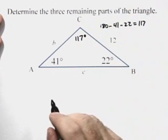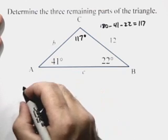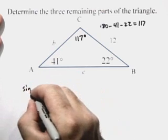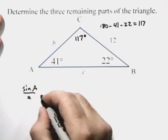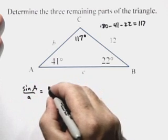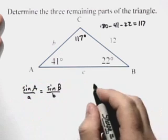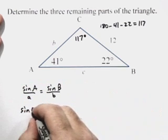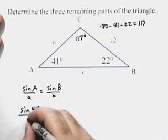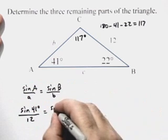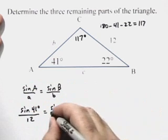We can use the law of sines to find the length of side B. The sine of angle A divided by A is equal to the sine of angle B divided by B. The sine of 41 degrees over 12 is equal to the sine of 22 degrees over B.